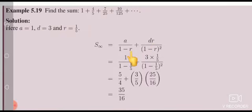A value is 1, 1 minus r. R value is 1/5 plus dr. D is the common difference which is 3, r common ratio is 1/5. So substitute the values: divided by 1 minus r, 1/5 the whole square.